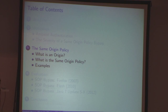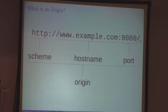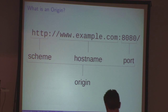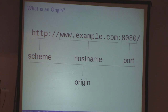Now I'll talk about what the same origin policy actually is. First of all, what is an origin? An origin is the set of the scheme, the host name, and the port of a URI. The origin is an attribute of a web page that only looks at the URI, and it always compares these three attributes for read access. If they match, access is granted; if they don't, access is denied. If a URI doesn't have a port given, you can always assume the default port, like 80 or 443.